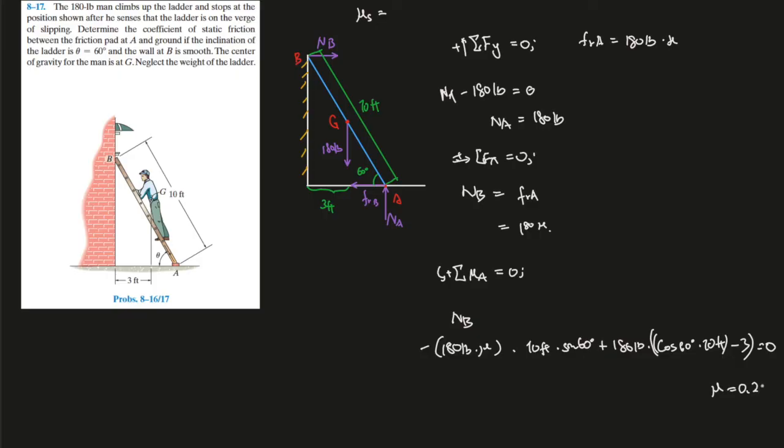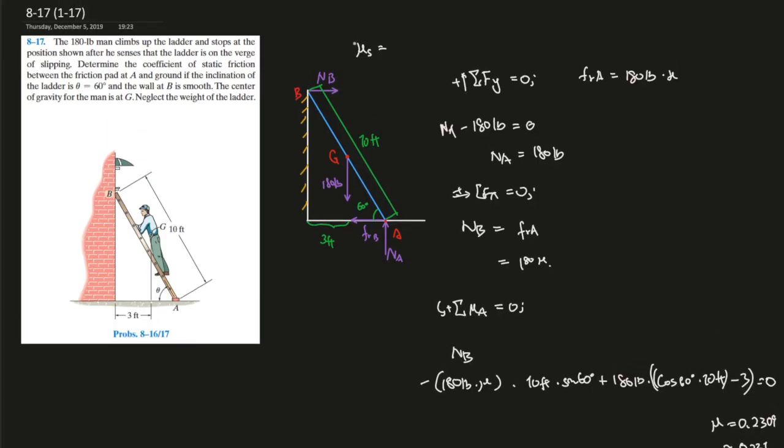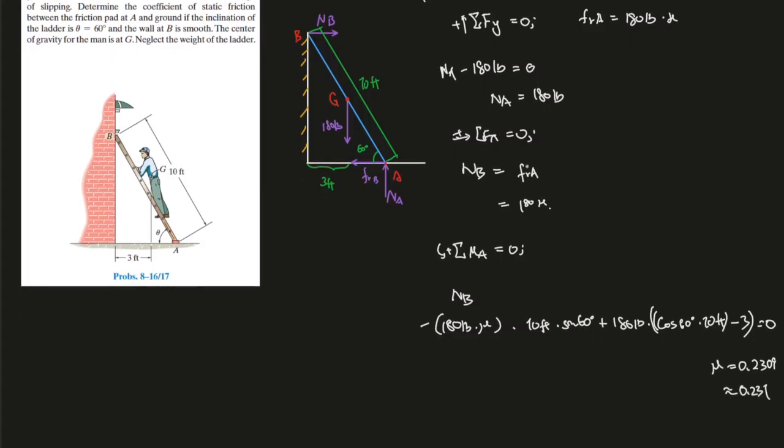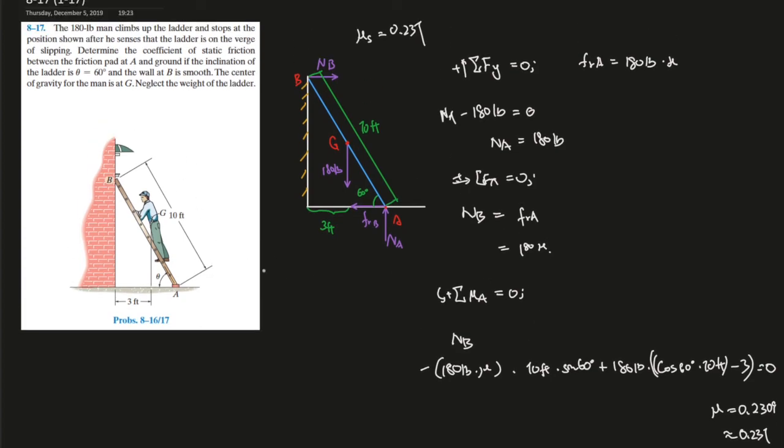So in reality it should be 0.2309, round to 0.231. And that is the value of mu, 0.231.